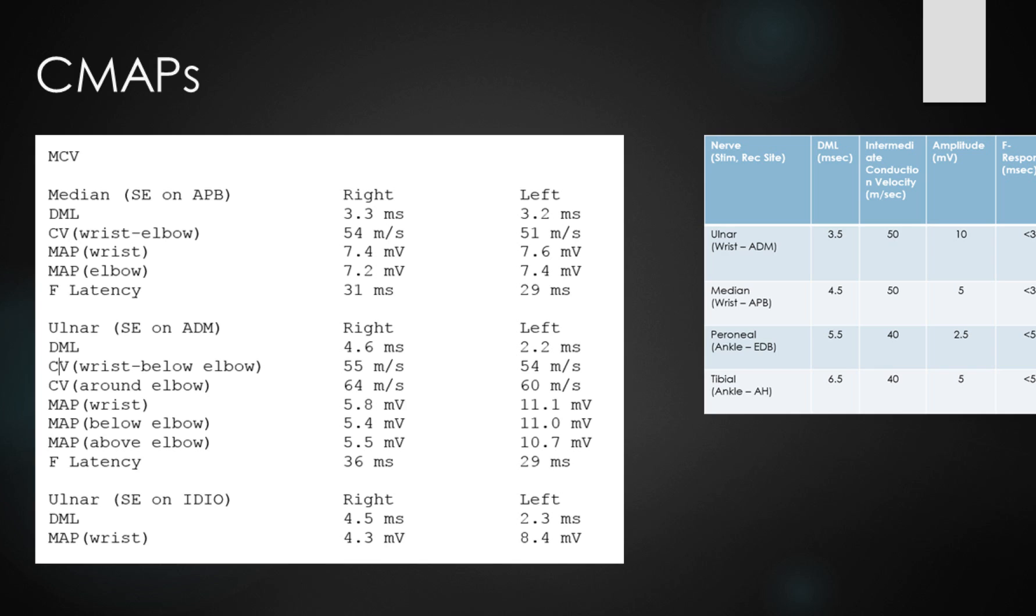Let's have a look at the motor amplitudes now and compare them to the other side. We can see the amplitude is 5.8 millivolts compared to 11.1 on the other side. So very clearly we have a reduction in the motor amplitude response and slowing distally across the wrist at 4.6 milliseconds for the ulnar nerve. Coming to the F latency, this is clearly delayed at 36 milliseconds compared to 29 milliseconds on the left-hand side.